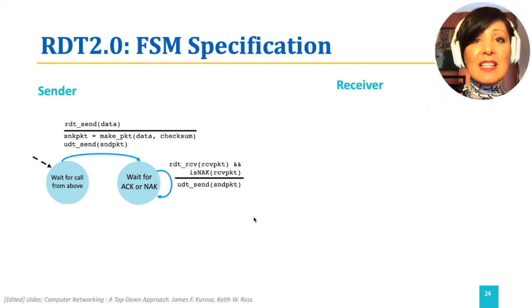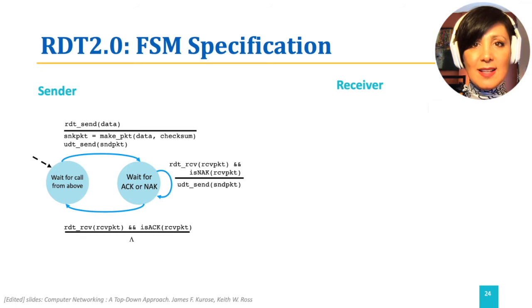If an Acknowledgement is received and is positive, the sender does not do anything additional, which is depicted by the lambda in the transition actions, but transitions back to the wait state until it receives another packet from layer above.